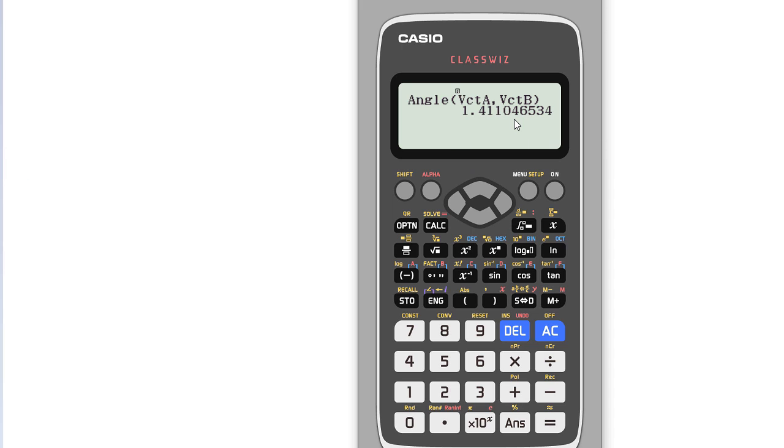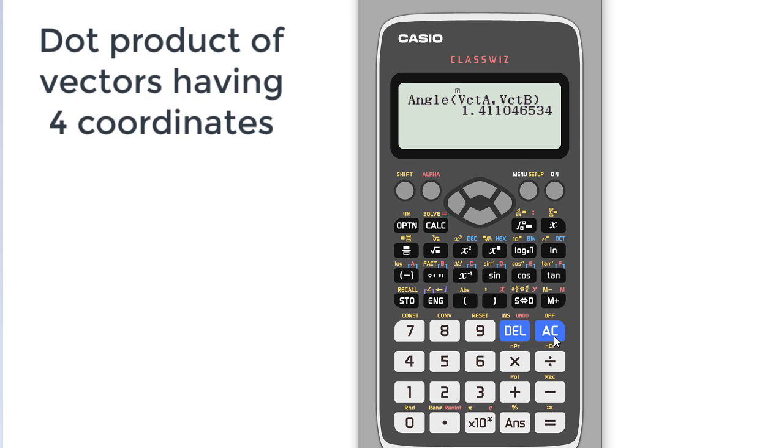So in this way you can find the magnitude, angle, and dot product of any vector through using calculator. And now let's go to the main topic, which is how to find the dot product of vector having four coordinates. Now this is a very important thing because when we define a vector, we can't see any option of four elements. We only can see the dimension of two and three. So for this we have to go to the matrix menu.